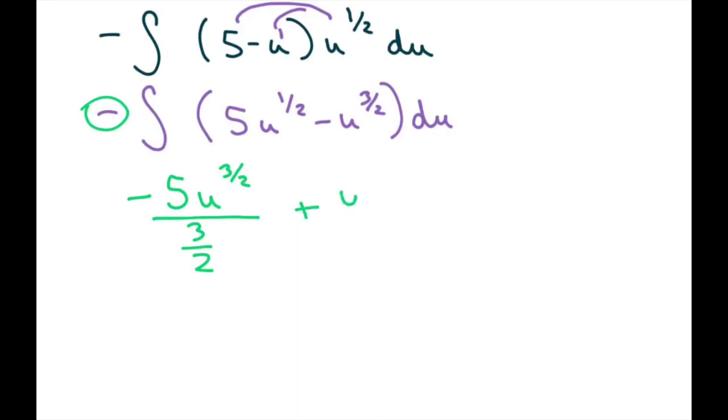Plus u to the five halves, because you add one here so it's five halves over five halves, and then we have plus c.